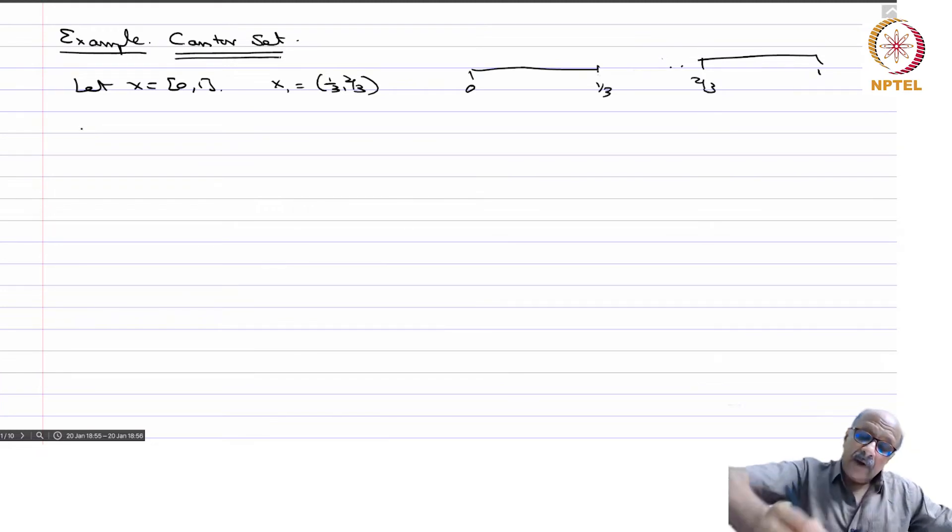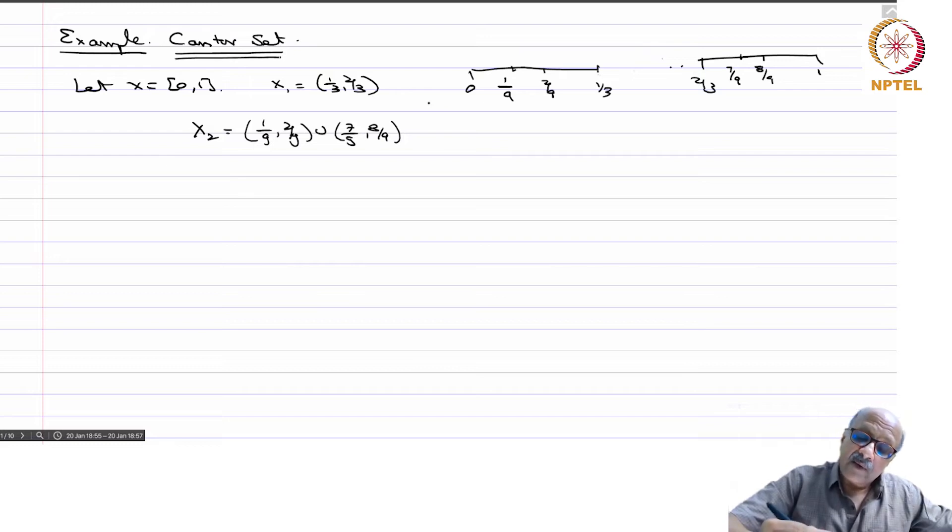Now I take the middle, divide each one of them into three parts and then this becomes 1/9, this is 2/9, and then this is 7/9, 8/9. And then I write x2 is the middle of that. So it is (1/9, 2/9) union (7/9, 8/9). These are all disjoint open intervals and then I remove those also.